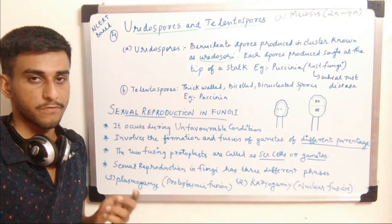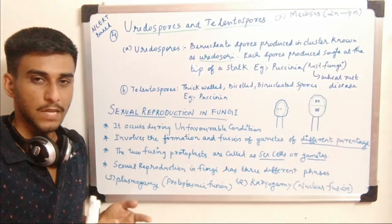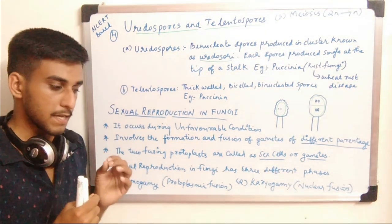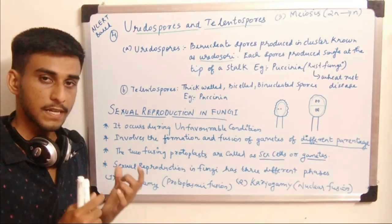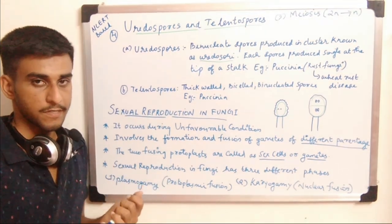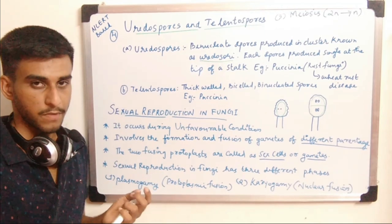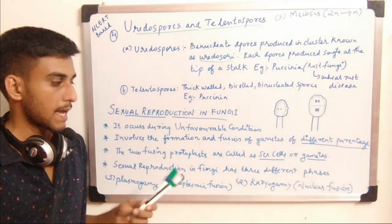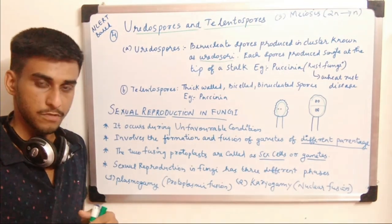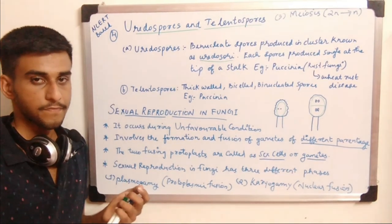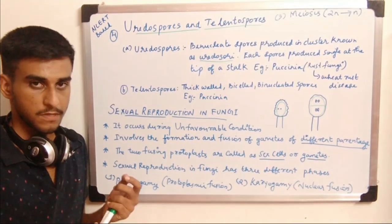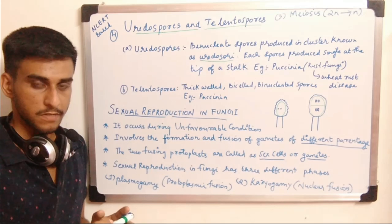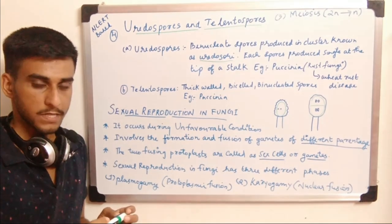The three phases in sexual reproduction are: first, plasmogamy; second, karyogamy; and third, meiosis. Plasmogamy involves the fusion of the protoplasm. Karyogamy — karyo means nucleus — is the fusion of nucleus. Meiosis is the reductional division required for gamete formation.